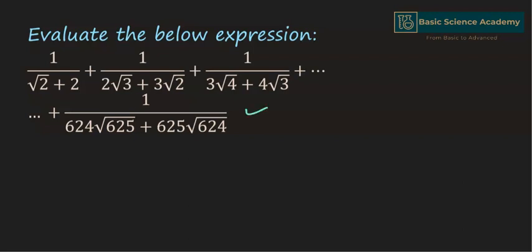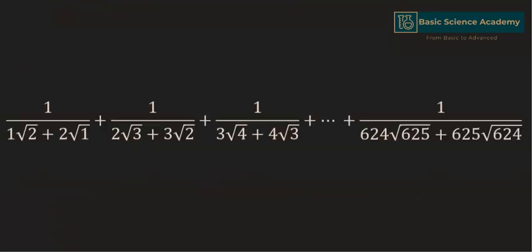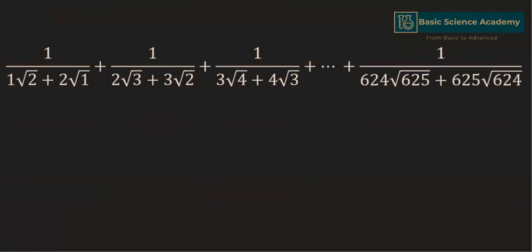Since square root 1 equals 1, we can write the first expression as 1 divided by square root 2 plus 2, which equals 1 divided by 1 multiplied by square root 2 plus 2 multiplied by square root 1.